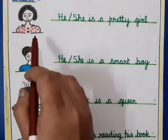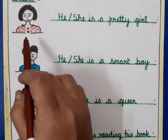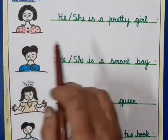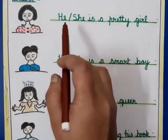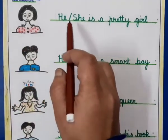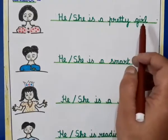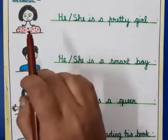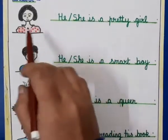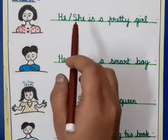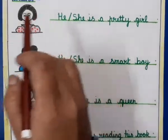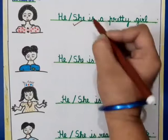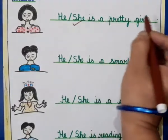You can see a picture of a girl, and we use 'she' for a girl. The sentence is: 'He or she is a pretty girl.' We have to tick the correct answer. We use 'she' for girls, so we will tick: 'She is a pretty girl.'